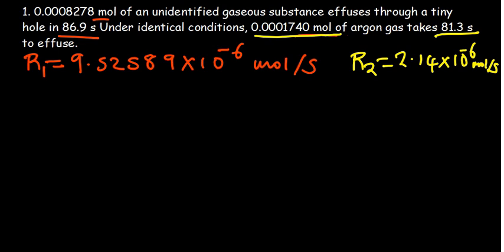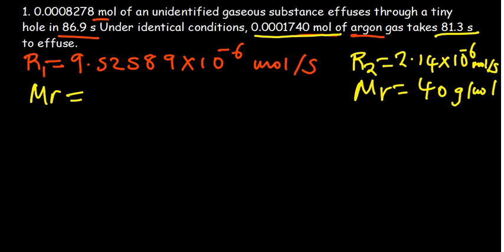The question is asking: what is the molar mass of the unidentified substance? Since they've mentioned argon, we can check the periodic table for its molar mass — approximately 39.95, so we'll take it as 40 grams per mole. For the unidentified gas, we don't know its molar mass. So we're trying to find the molar mass of the unidentified gaseous substance and then identify it after determining that molar mass.